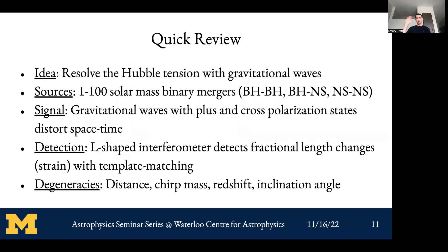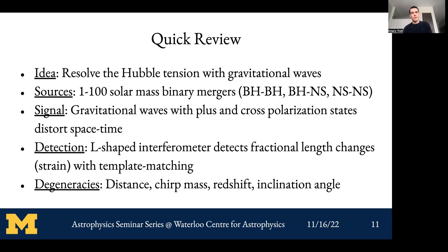To summarize the gravitational wave introduction: we're interested in resolving the Hubble tension, using one-to-hundred solar mass binary mergers — black hole–black hole, black hole–neutron star, or neutron star–neutron star. We look for plus and cross polarization distortions in spacetime using L-shaped interferometers. There are degeneracy problems between distance, chirp mass, redshift, and inclination angle. For the rest of the talk, we'll focus on the distance–redshift relationship to measure the Hubble constant.